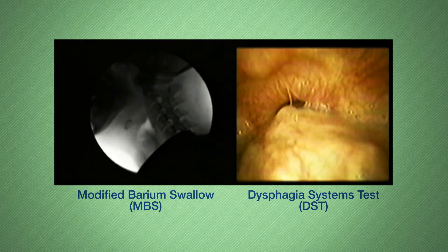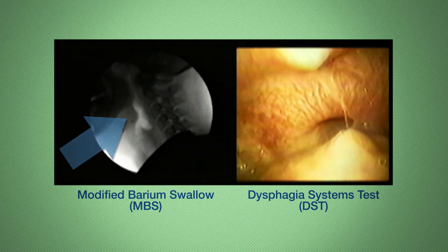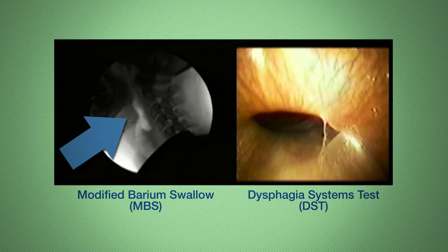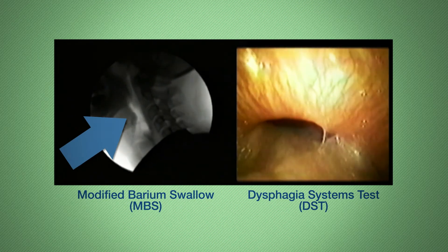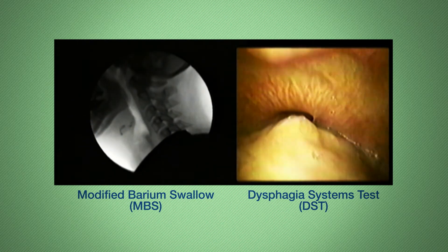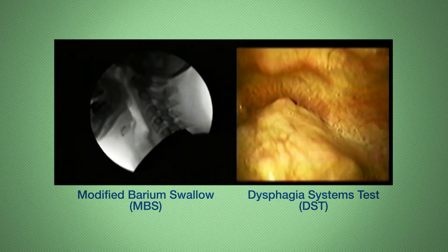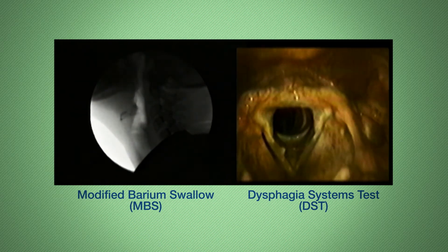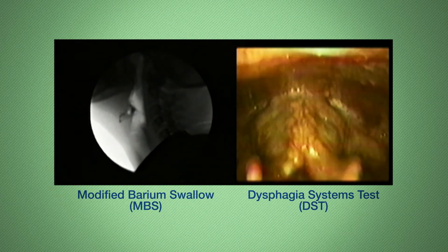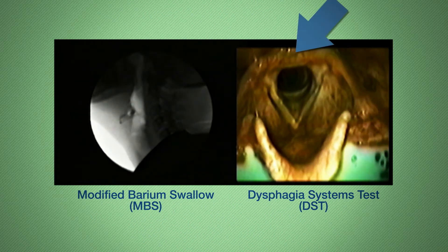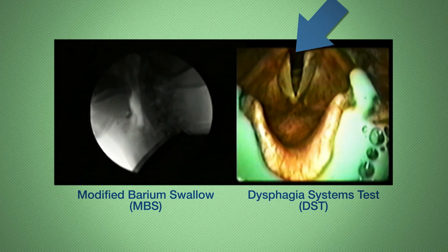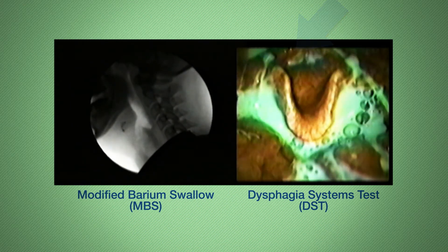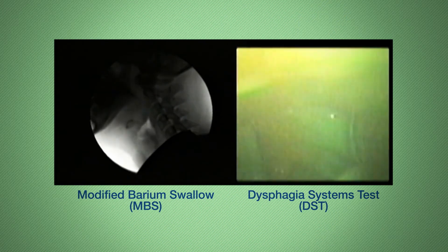You can see the black, barium-coated bolus as it passes from the mouth and pharynx on the way to the stomach. On the right is a view of the dysphagia systems test, or DST. The full-color view shows the food or liquid as it passes into the pharynx and is aspirated into the trachea, viewed in the center of the picture.